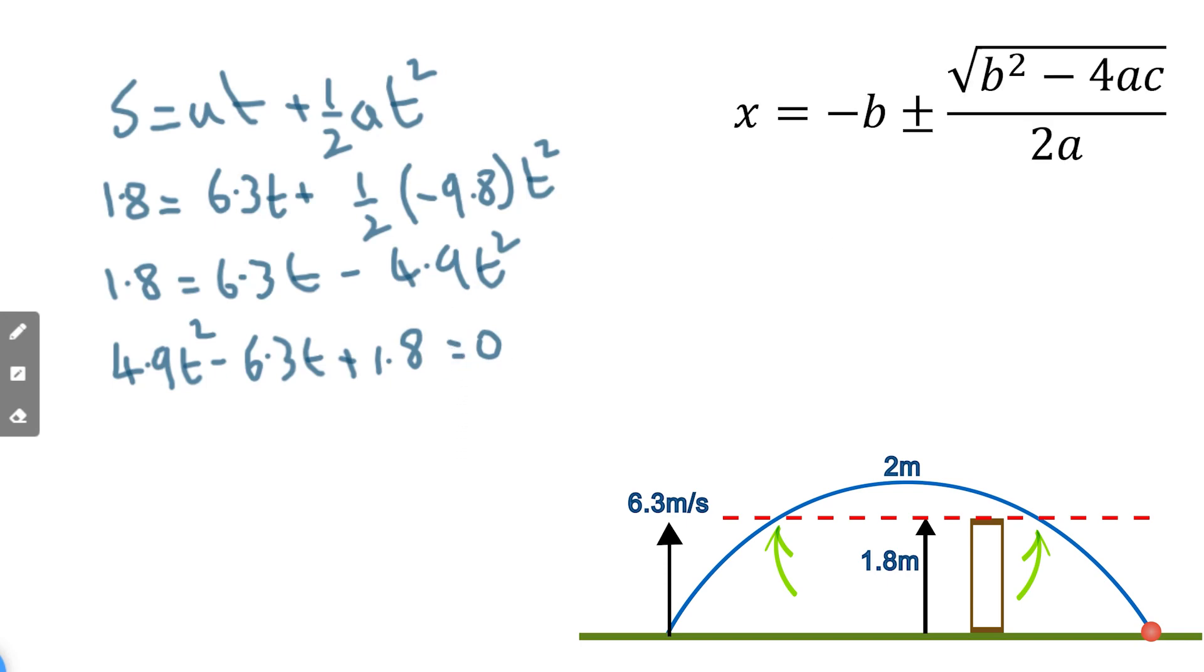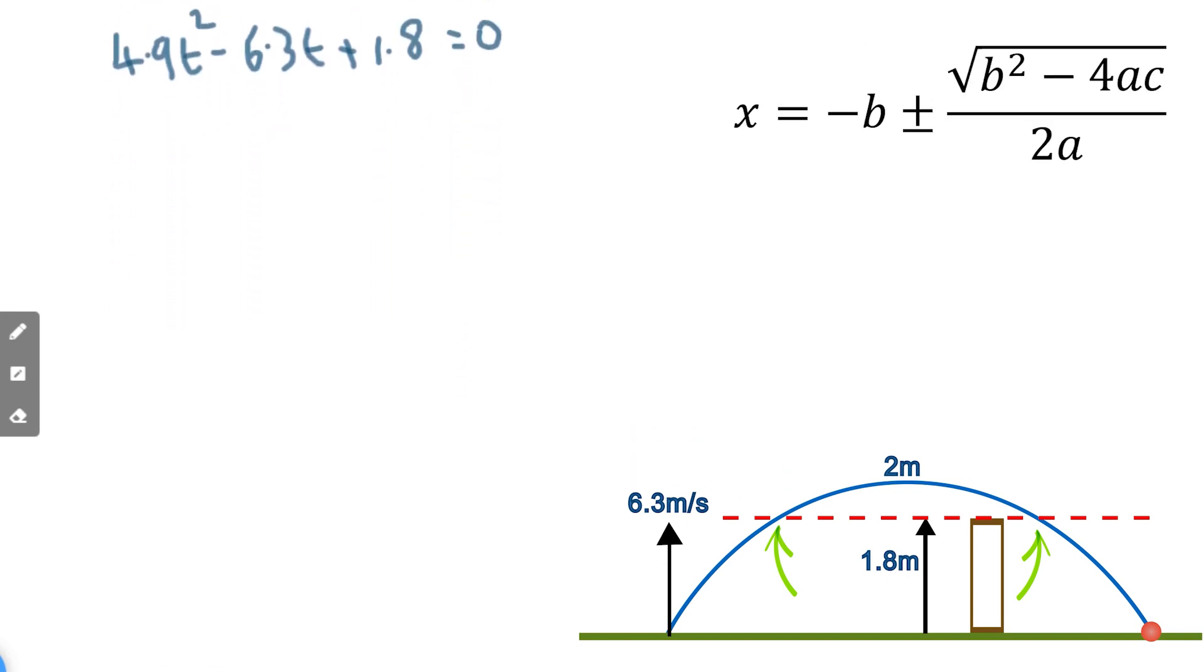To solve the quadratic equation, simply look for the values of a, b and c. So a is going to be 4.9, b is going to be negative 6.3, and c is going to be 1.8.